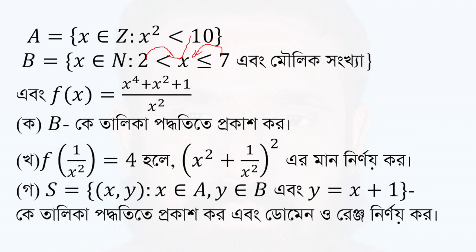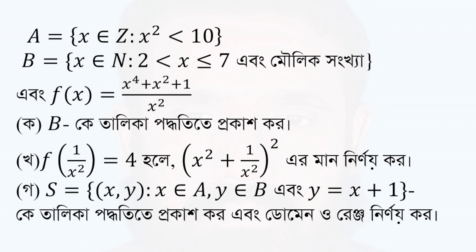Now, r minus 1 minus 2 minus 2 minus 2 minus 2 minus 2 minus 1 minus 1 minus 2. Then the function of f is equal to 4 plus x squared minus 1 by x squared.